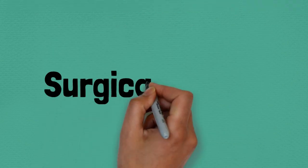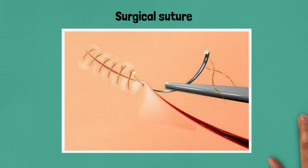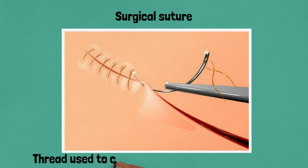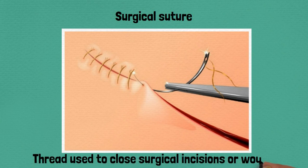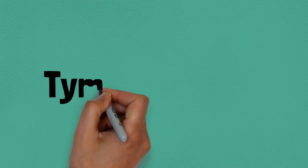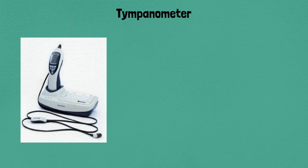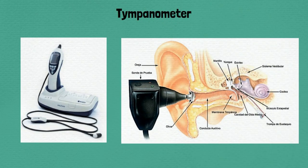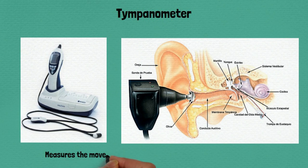Eighty: surgical suture, thread used to close surgical incisions or wounds. Eighty-one: tympanometer, measures the movement of the eardrum to assess middle ear function.